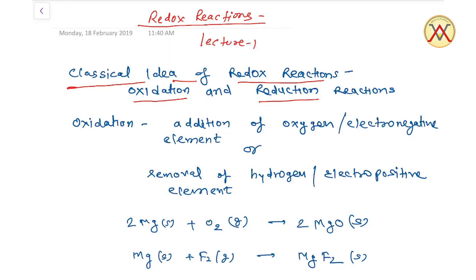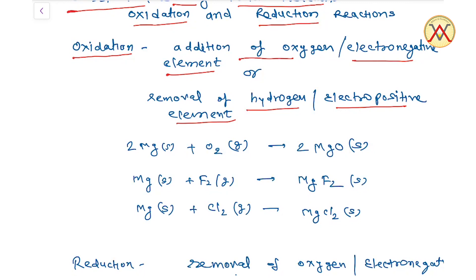सबसे पहले हम लोग बात करेंगे Oxidation Reaction की Definition। Oxidation की Classical Definition क्या है? Addition of Oxygen या Electro-Negative Element, या Removal of Hydrogen या Removal of Electro-Positive Element। यानि उन Reactions को Oxidation कहेंगे जिनमें Oxygen का Addition हो, Electro-Negative Element का Addition हो, Hydrogen का Removal हो, या Electro-Positive Element का Removal हो।